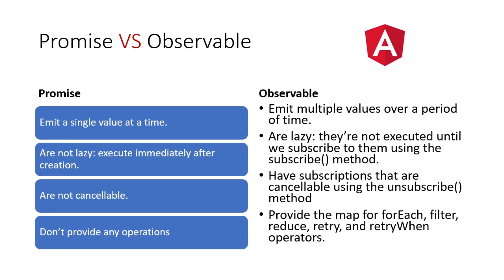Now let's look at the differences between Observable and Promise. Promise emits a single value at a time — it waits for all the data to come and sends a single response. Observable, on the other hand, does not wait for all the data; it emits multiple values over a period of time.